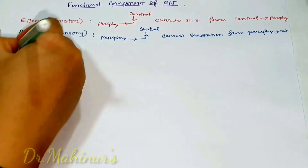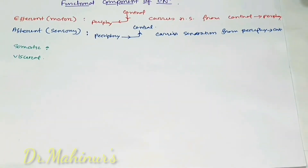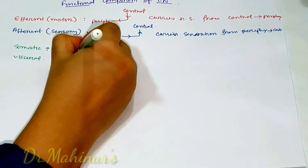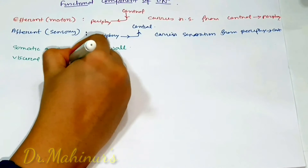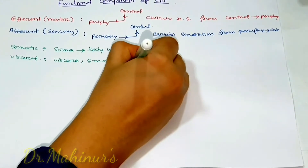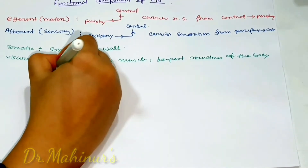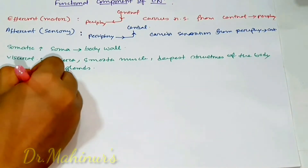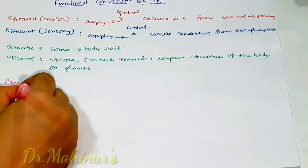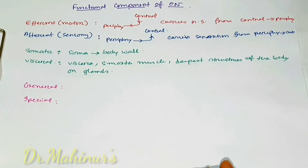Next we need to know about somatic and visceral fibers. Somatic means soma, or body wall — when a nerve fiber gives supply to the body wall, we call that fiber somatic. Visceral refers to when it gives supply to smooth muscle, the deepest structures of the body, or glands — then we say that nerve fiber has a visceral component.